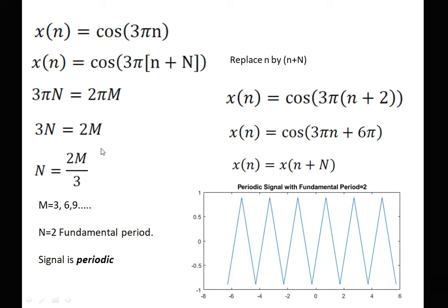From here, if m is a multiple of 3, we get N as a positive integer. So putting m in the range of multiples of 3, the fundamental period of the signal is N = 2, and the signal is periodic in nature.